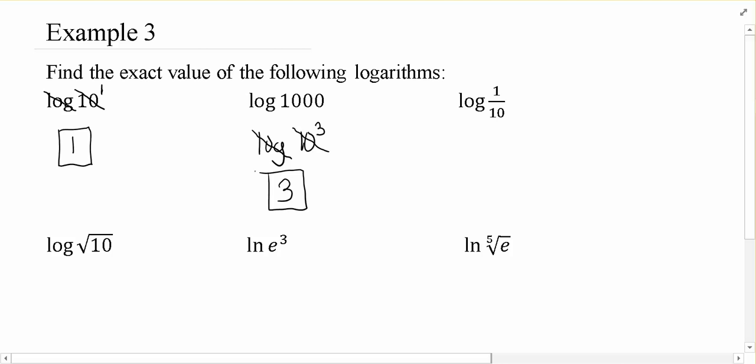Now like we saw in the last lesson, when you have fractions, in particular 1 over, you want to think about this as a negative exponent. So 1 tenth is 10 to the negative first, at which point the common log and the 10 undo one another, leaving us with just negative 1.